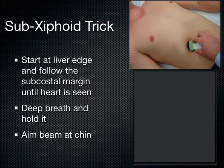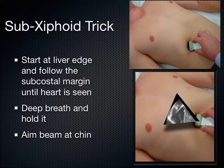The interesting thing about the sub-xiphoid view is that, unlike other views, we don't aim the probe toward the left side of the body. We use the liver as our window to see the heart. That's why we start at the liver edge, moving up into the sub-xiphoid, aiming the beam toward the patient's chin — using the liver as the window. If we aim to the left, we get the lung in the way and lose the image.